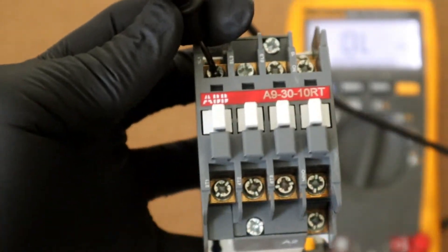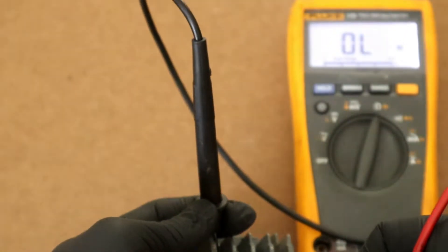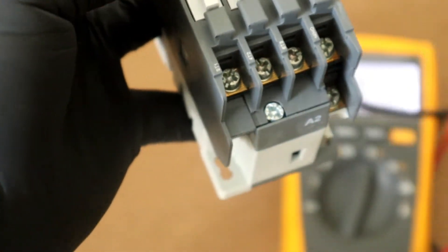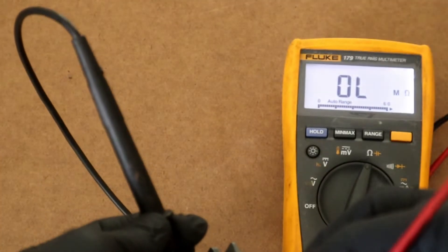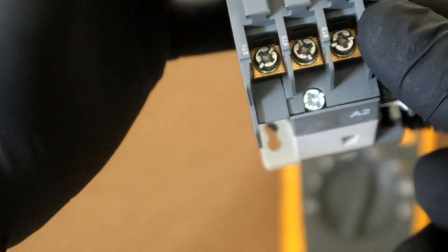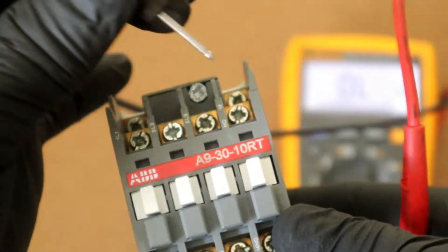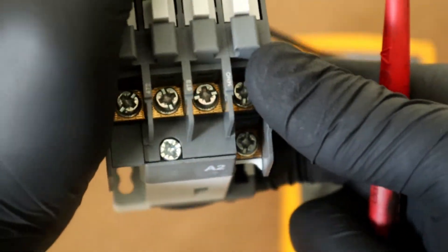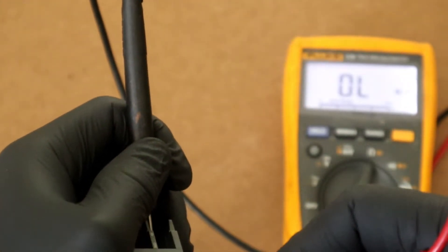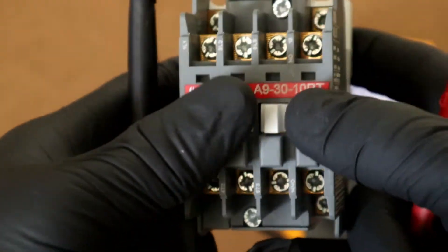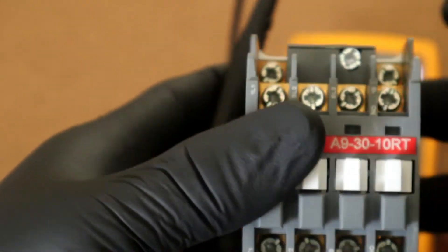So we go across L1, T1, got an OL on our multimeter. We go across L2 and T2, OL on our Fluke. We go across L3 and T3 contacts, OL on our multimeter. We have our normally open contact on the far right. We go across those contact points, OL on our multimeter. The high current, high voltage contact points so far have been good.